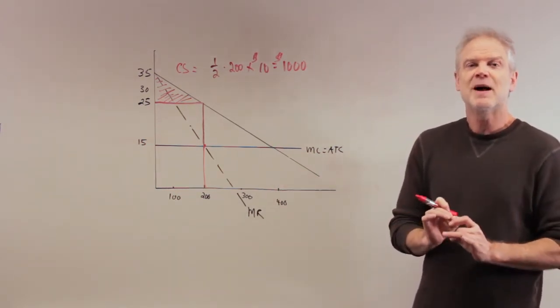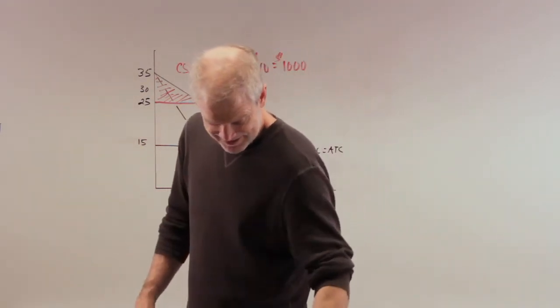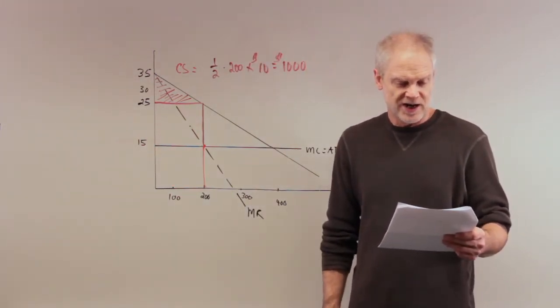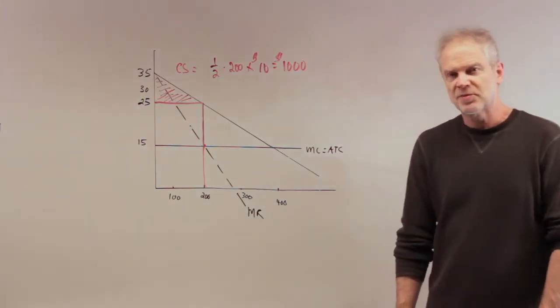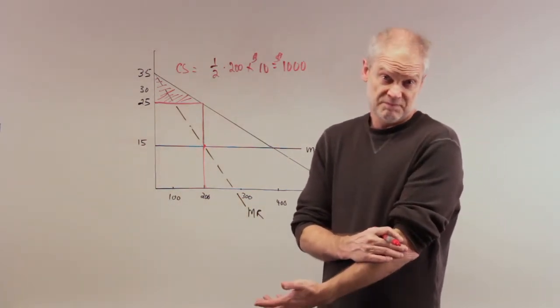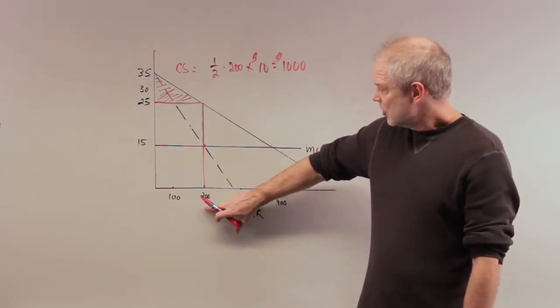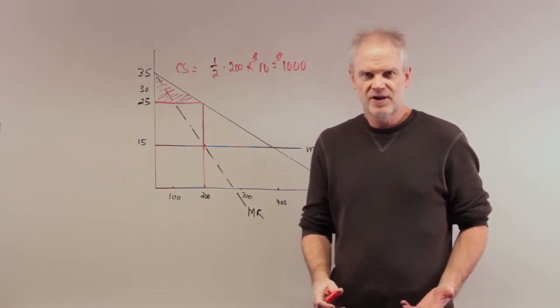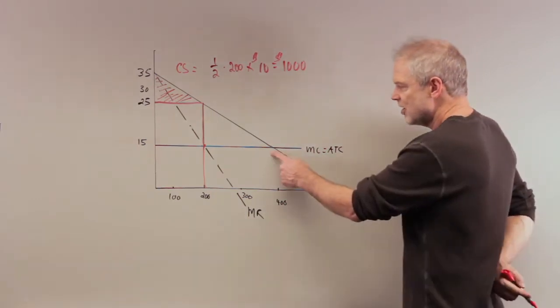Number nine: if the monopoly firm is not allowed to price discriminate, then the deadweight loss amounts to what? I can't discriminate, I have to charge a non-price discriminating price. Again, I go back to my profit maximizing point: produce 200, charge 25. What would have happened if there had been a perfectly competitive market? If there's perfect competition, price equals marginal cost, we produce 400 units.